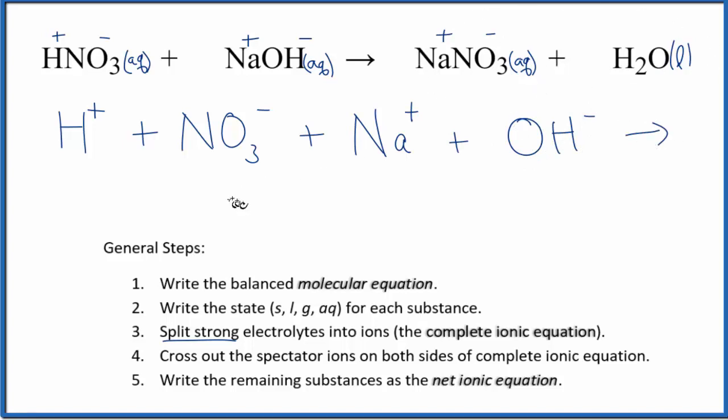On the product side of the equation, we have Na plus, and then we have the nitrate ion, NO3 minus, plus H2O. We won't split that up because that's a liquid. So now we have all of our ions. This is our complete ionic equation.